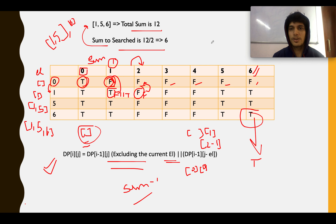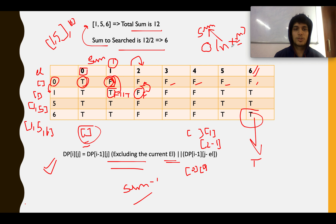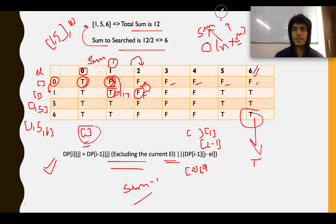The time complexity is O(n × m), where n is the target sum (total sum divided by 2) and m is the total number of elements in the input array. Let's quickly code this up.